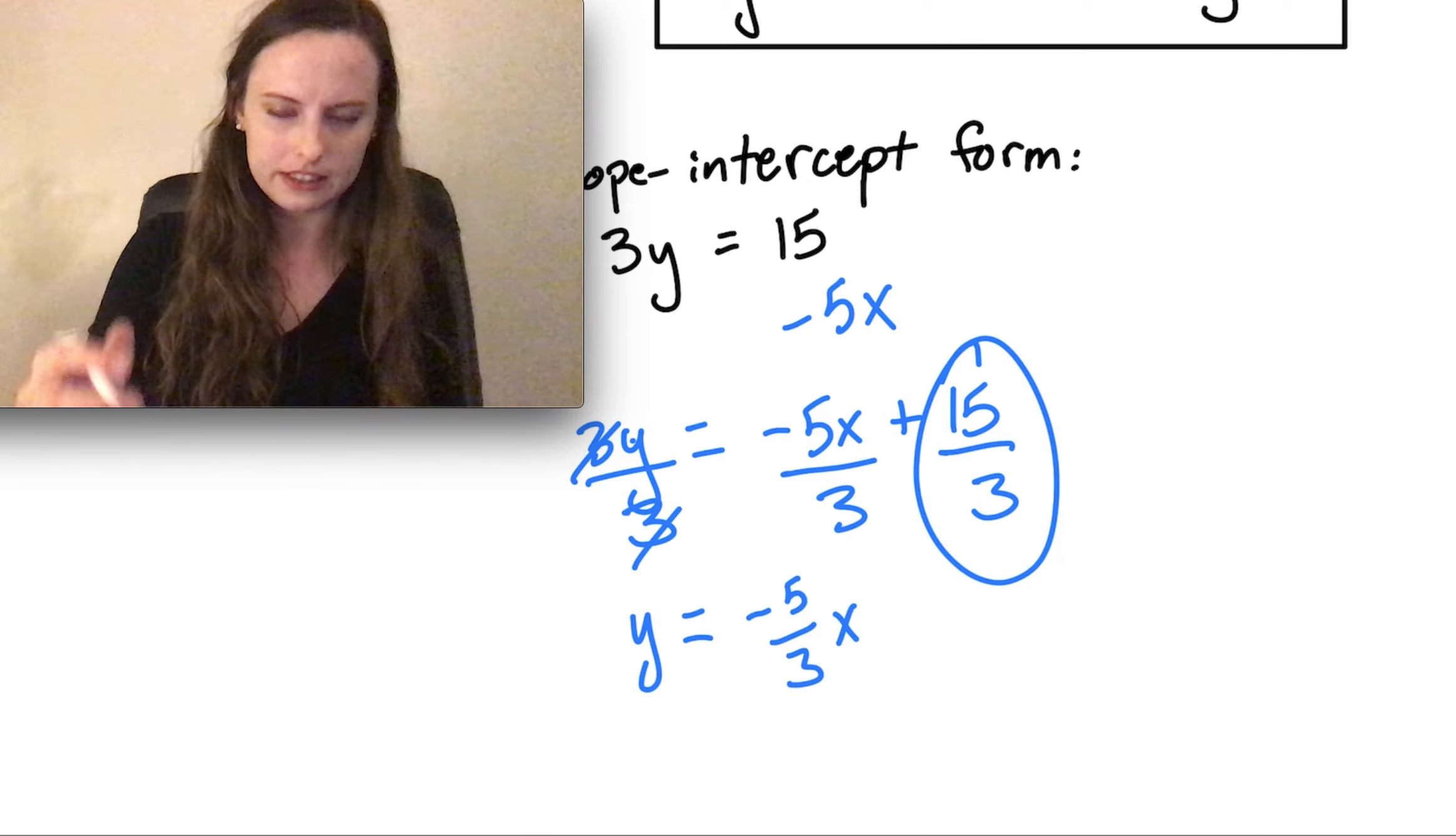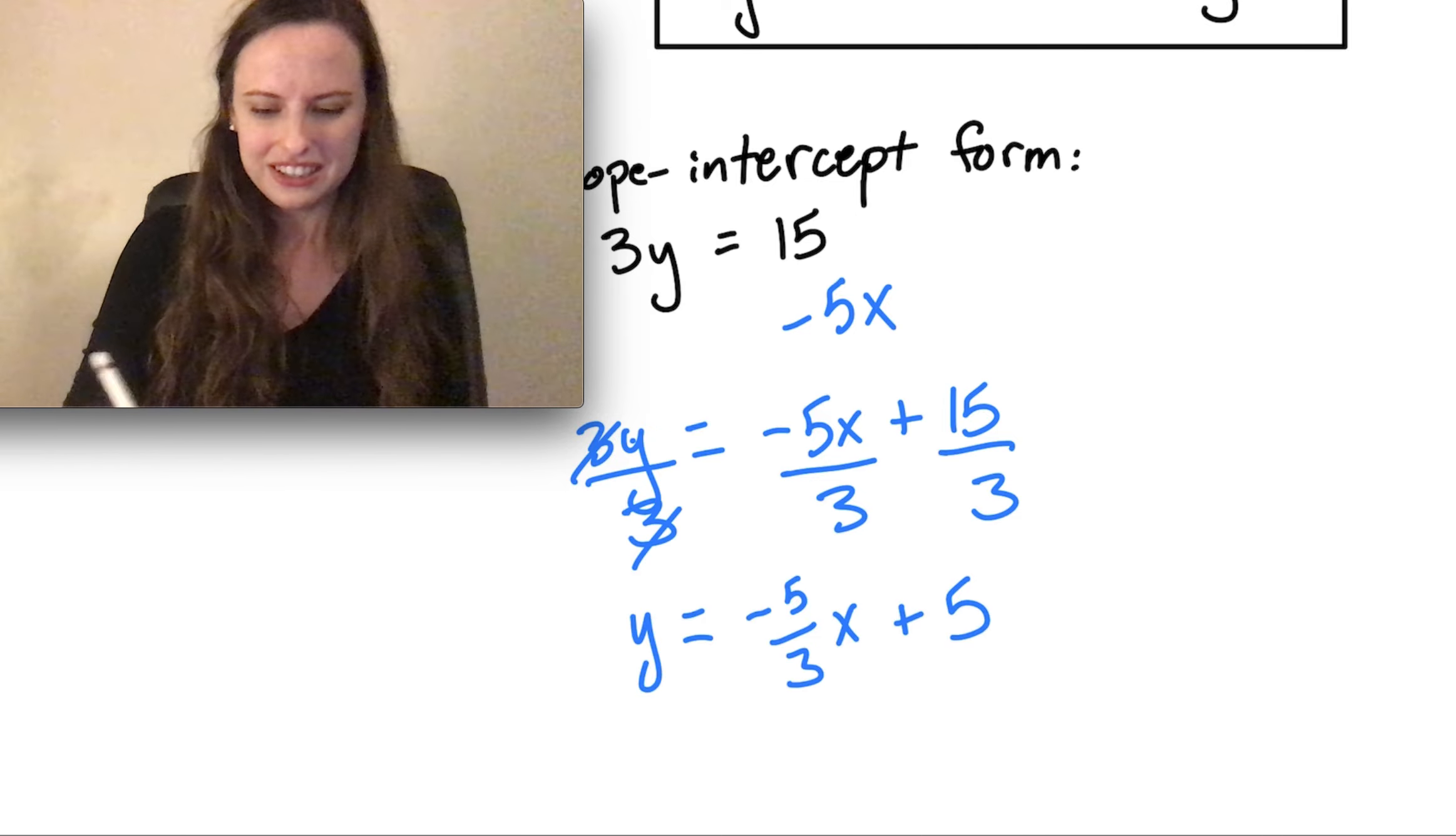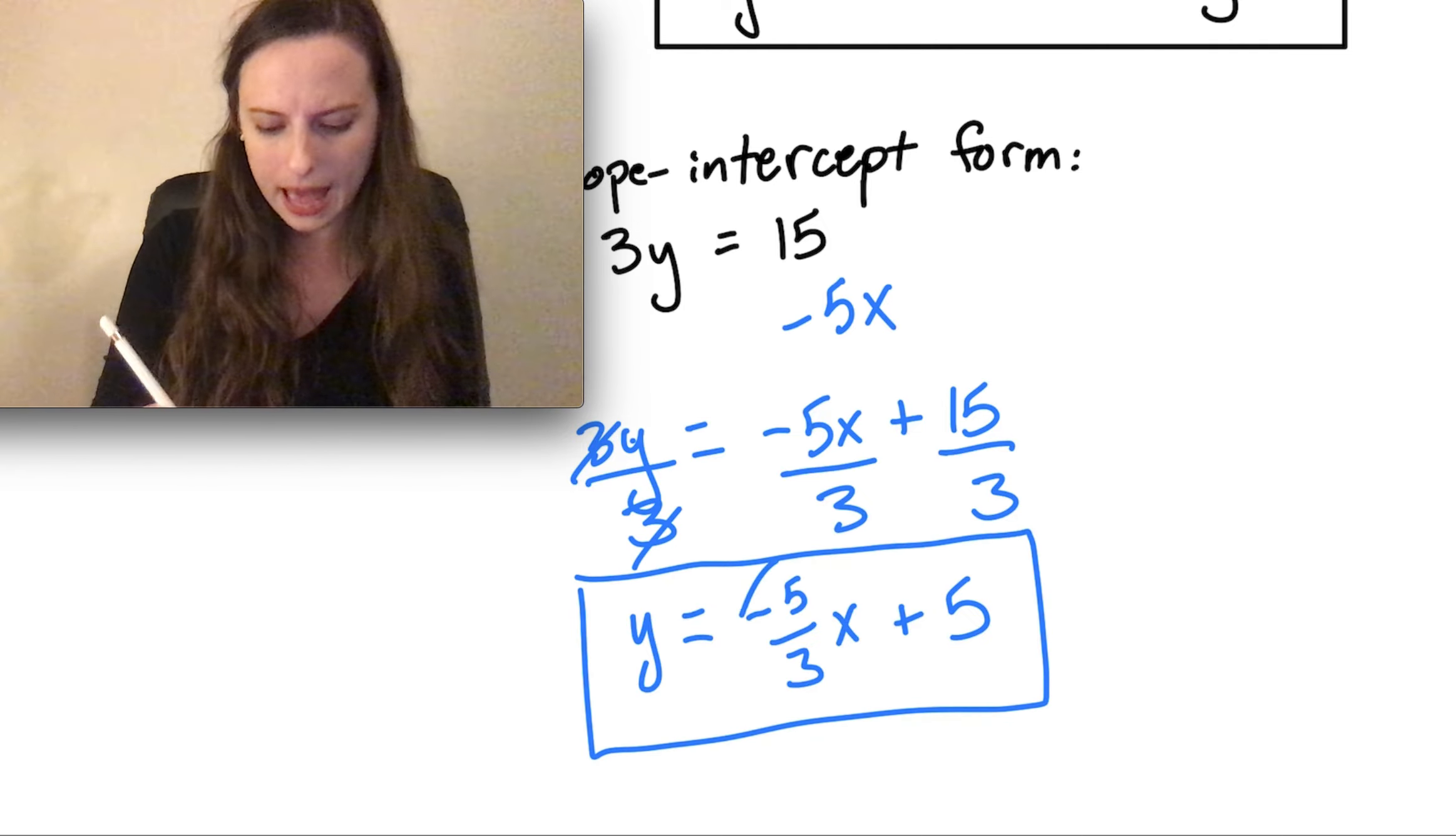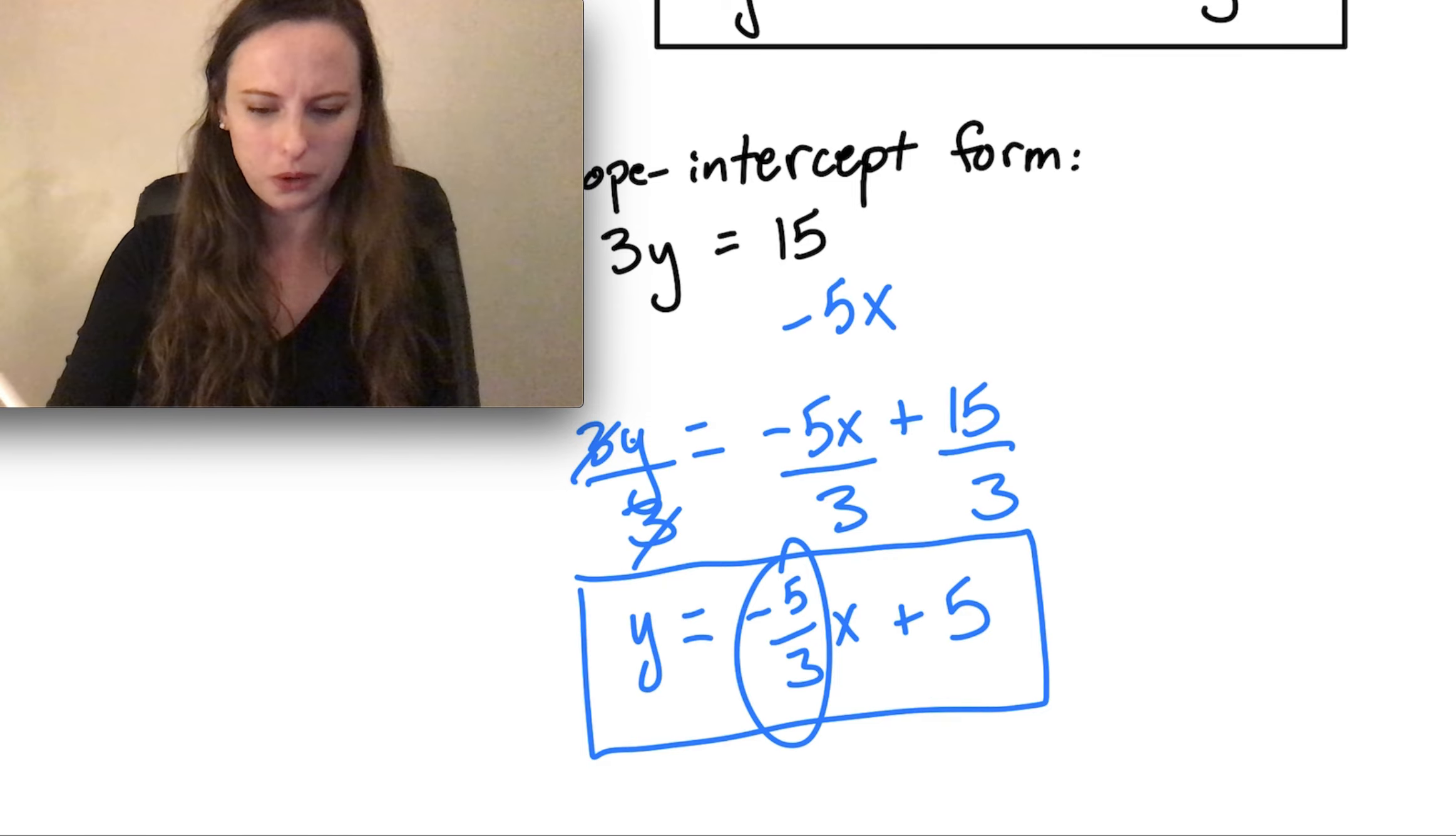Then our last step is to do 15 divided by 3, which equals 5. So once again, here's our final answer. Notice it's in y equals mx plus b form, slope-intercept form.